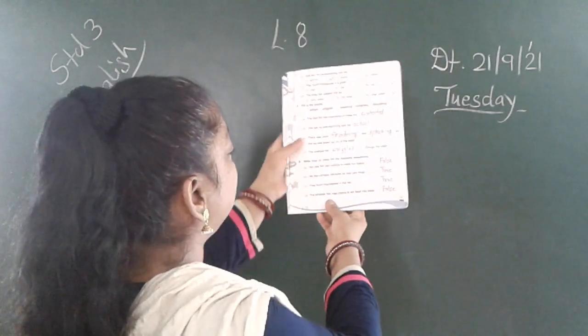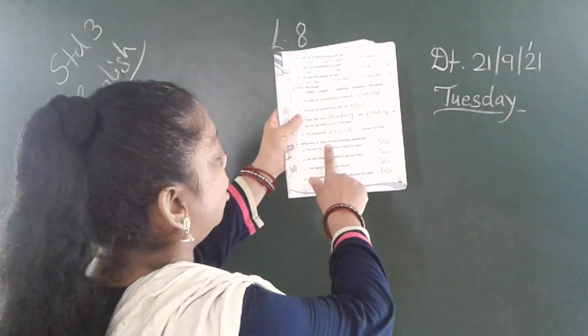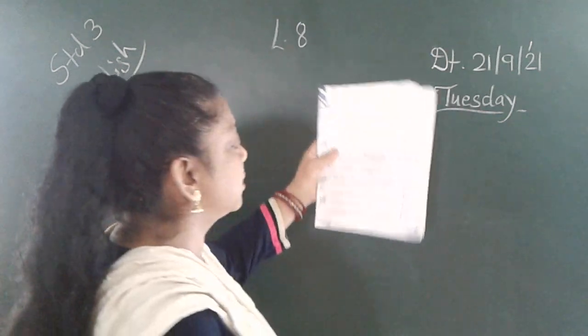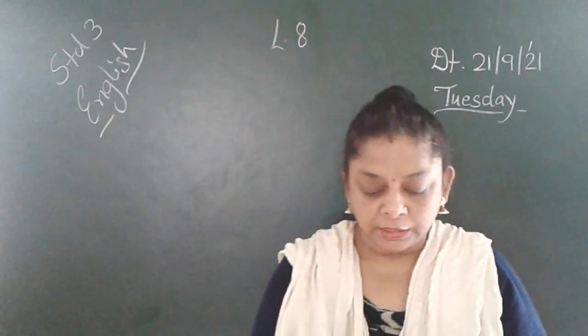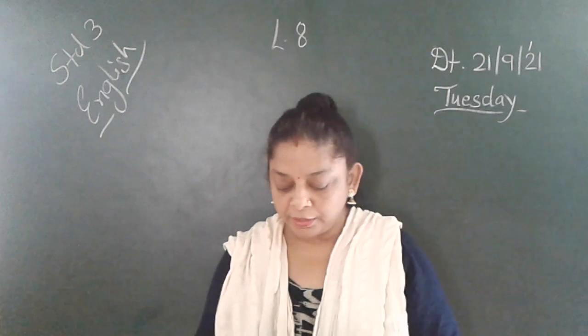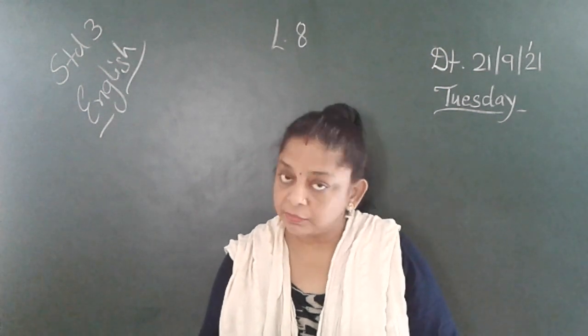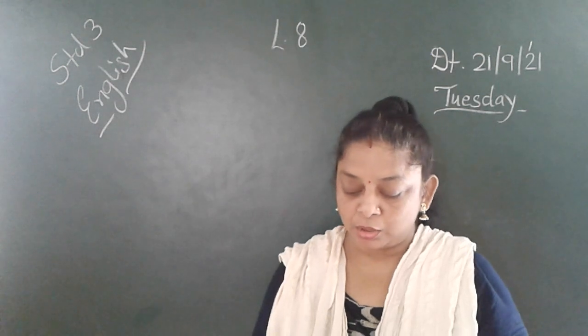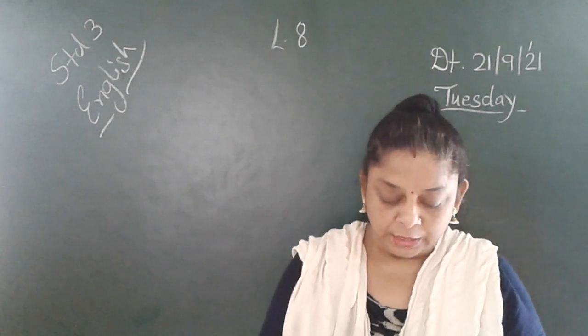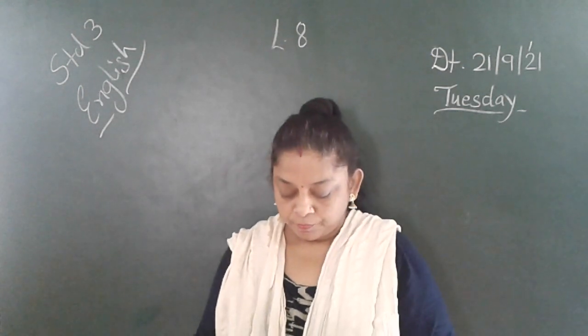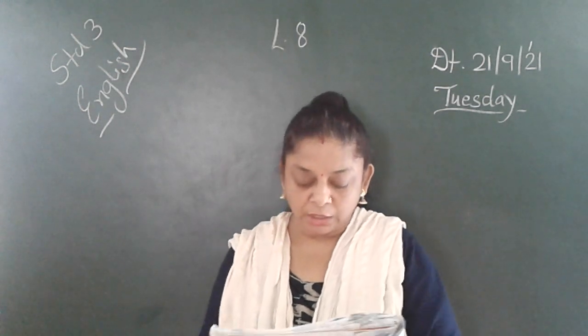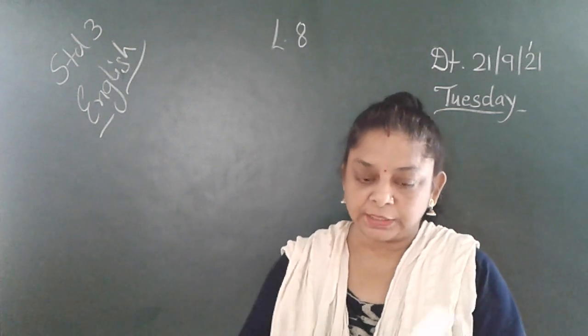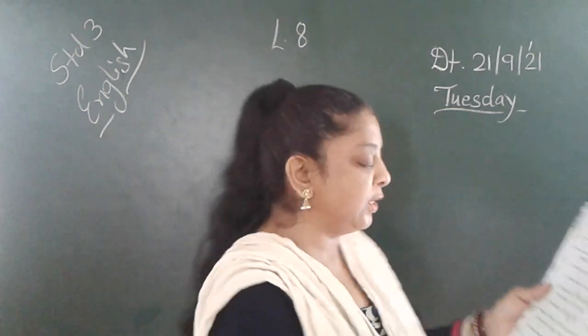Question number 3. Write true or false for the following sentences. A. The little fish had nothing to make him happy. That is false. B. He was unhappy because he was very small. That is true. C. They found themselves in the net. That is also true. D. The smallest fish was unable to slip back into water. That is false.